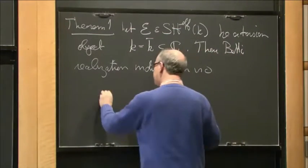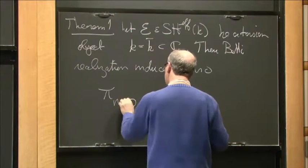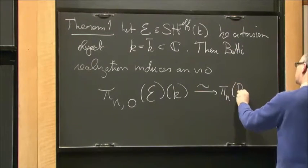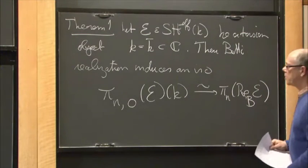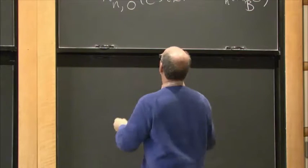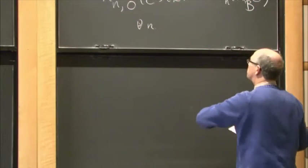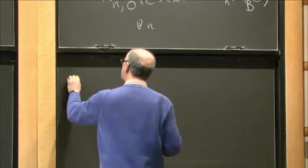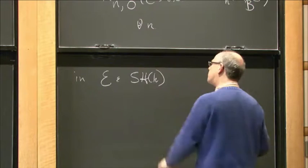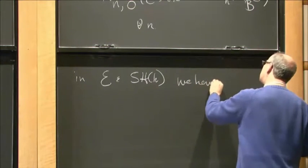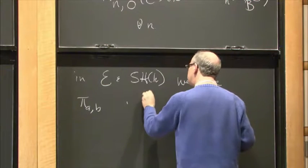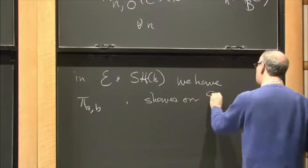Then there's a Betti realization functor from this category to the classical stable homotopy category. For an object E in this category, we have bi-graded homotopy sheaves — sheaves of abelian groups on smooth varieties over K. These are the analog of the stable homotopy groups of an object in spectra.